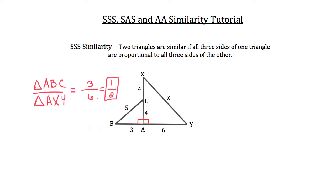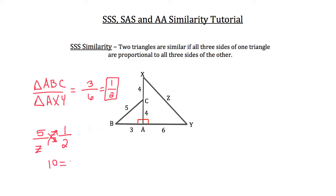This reduces the proportion to 1 over 2. Since these two triangles are similar, that proportion of 1 over 2 applies to all three sides. The missing side Z is the hypotenuse of triangle AXY, and it corresponds to the hypotenuse of triangle ABC, which has a length of 5. Setting up the proportion and using the cross product property: 5 times 2 is 10, equal to Z times 1, so Z equals 10.